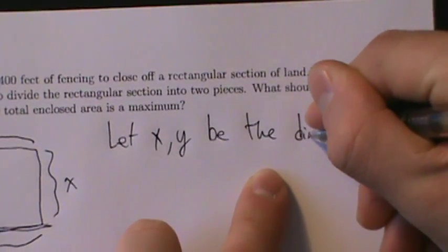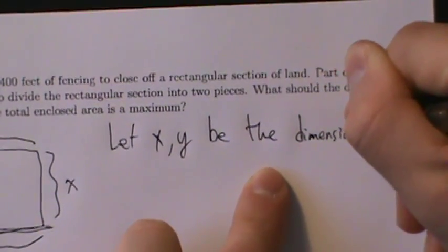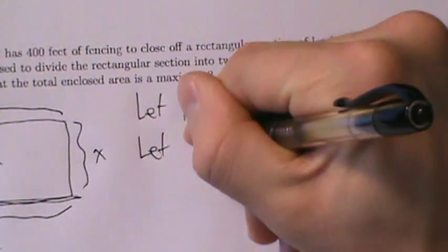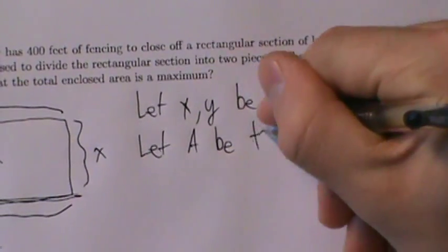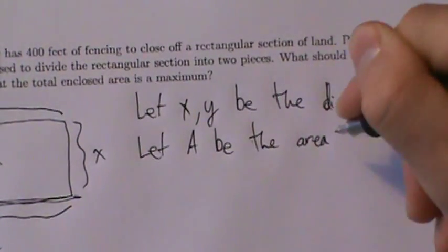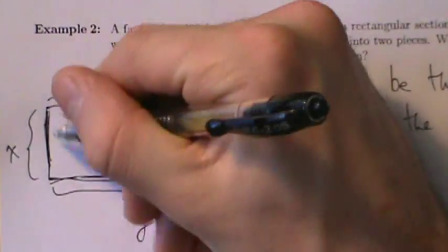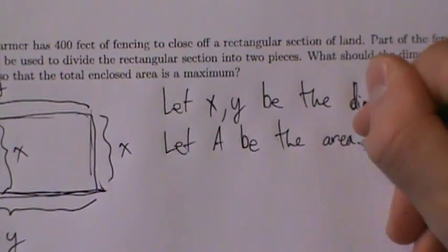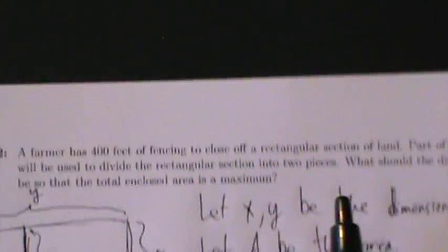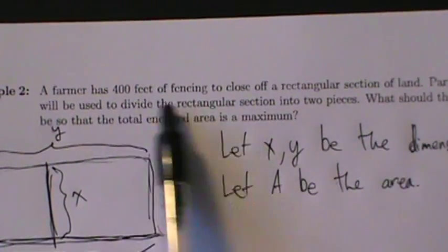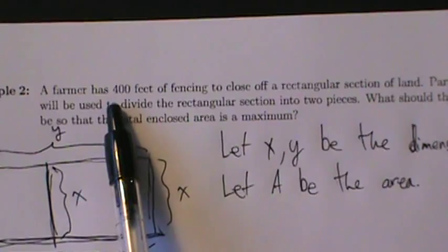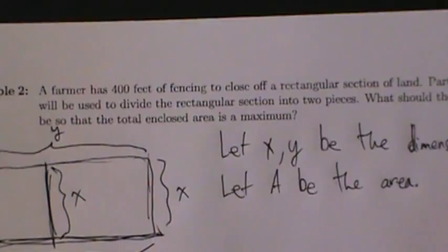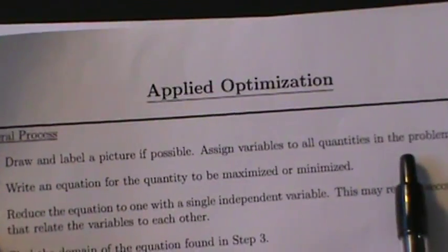Let x and y be the dimensions, and let A be the area — the total area enclosed by the entire rectangular piece. We also have 400 feet of fencing, which is kind of like a perimeter. But that's a constant, not a variable, so we don't need to assign it a variable. That's it for step one: draw and label a picture if possible and assign variables to all quantities.